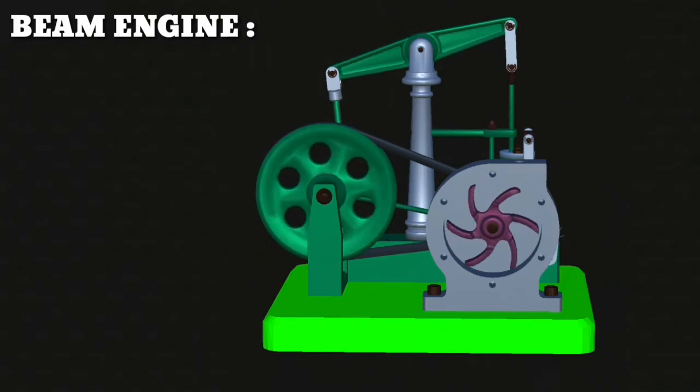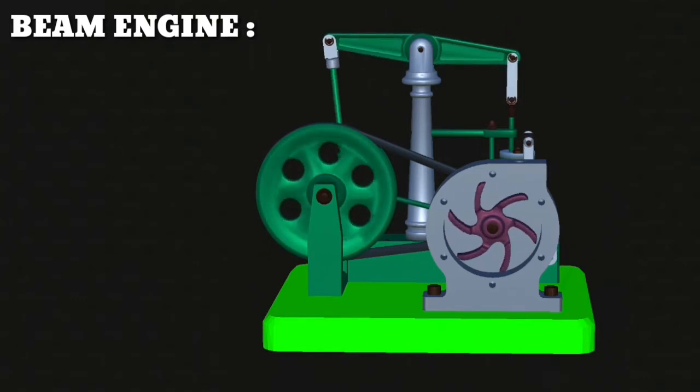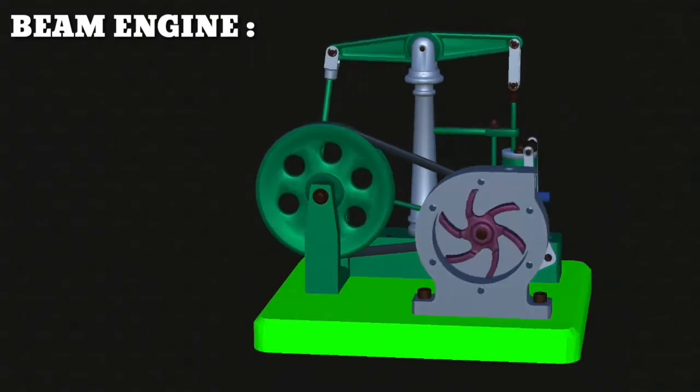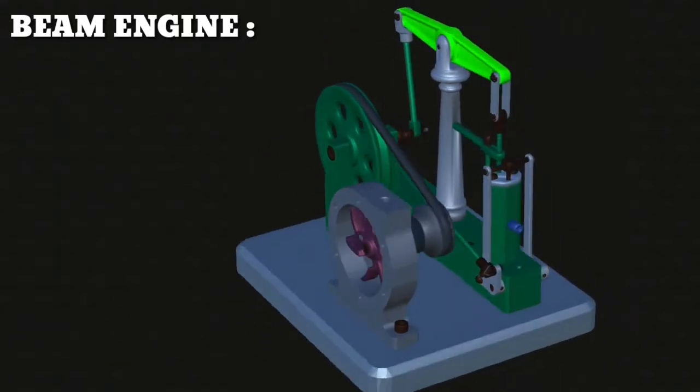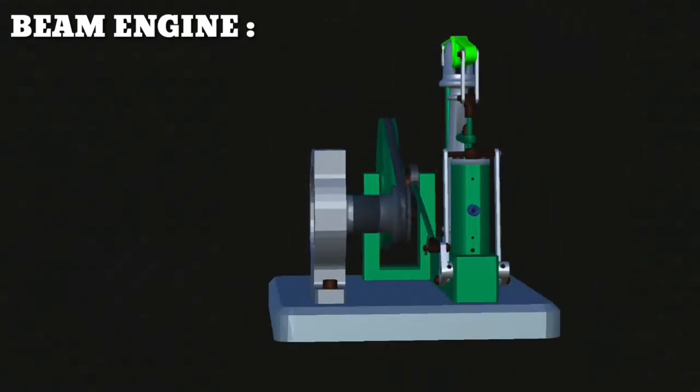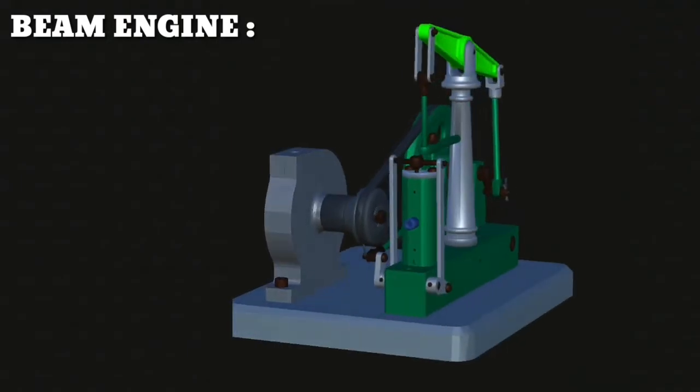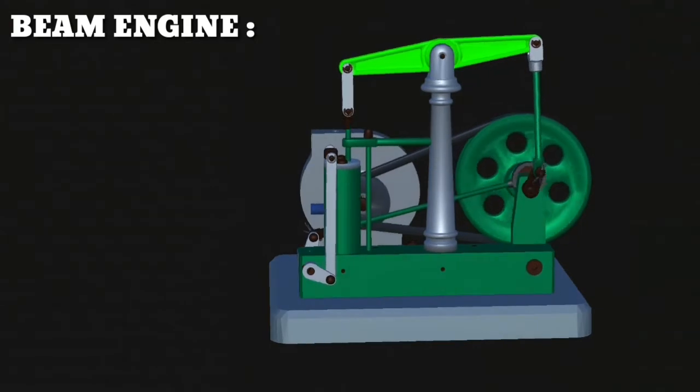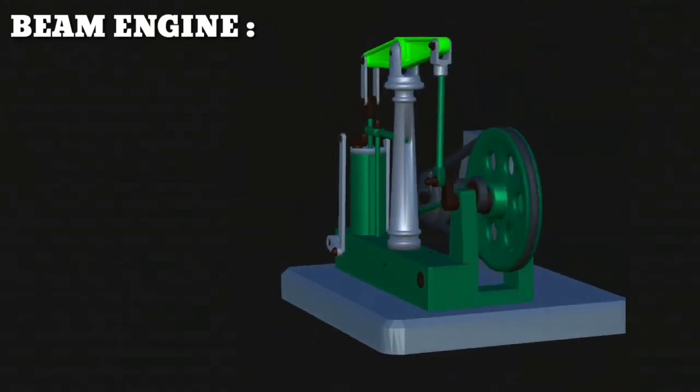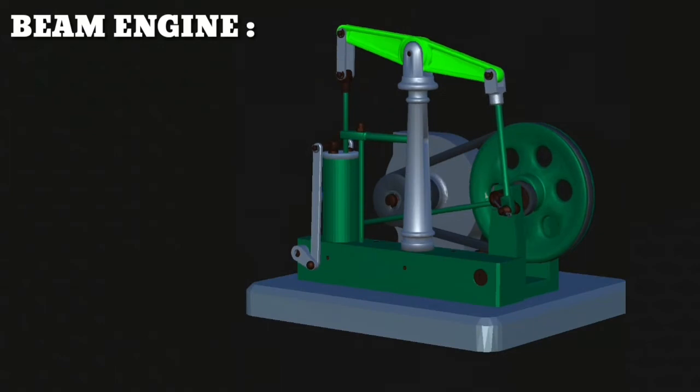Beam engine. This mechanism is an inversion of four bar chain mechanism. It has four turning pairs. It consists of a frame which is fixed and on which all other elements are fitted. The crank is fixed at a point on the frame. The crank is free to rotate about a point. The other end of the crank is connected to a connecting rod.